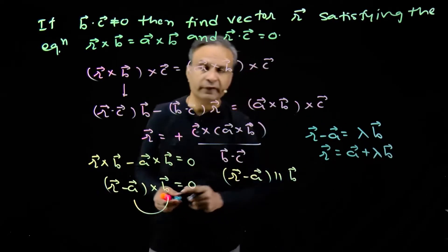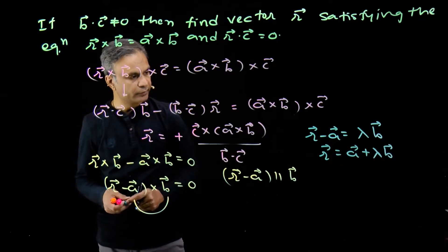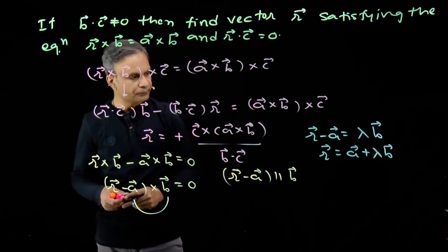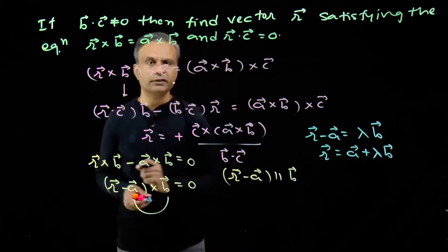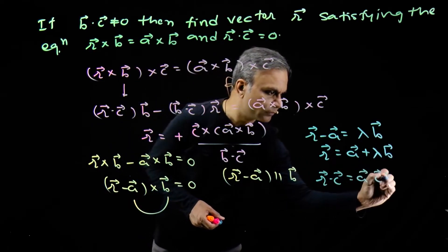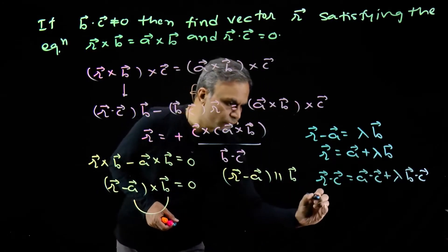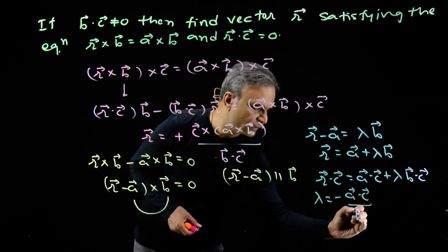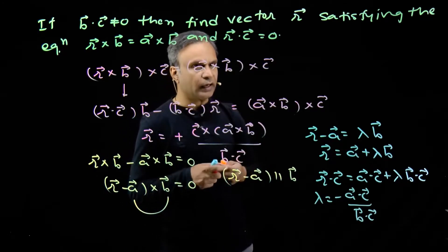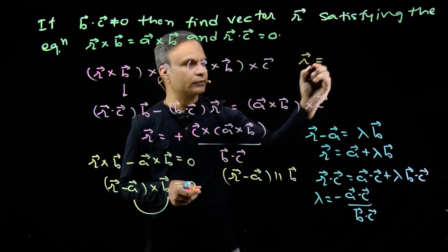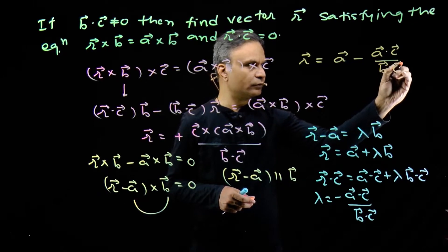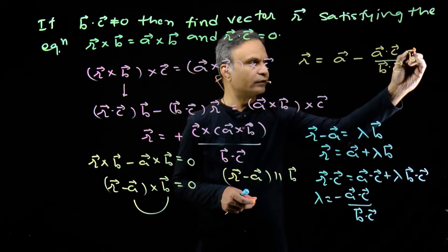How will we find the value of lambda? It is given that r dot c is equal to 0. We take dot product with vector c, and we get r dot c is equal to a dot c plus lambda times b dot c, where r dot c is 0. We get lambda is equal to minus a dot c over b dot c. When we put this value of lambda back, we get vector r is equal to a minus (a dot c over b dot c) times vector b.